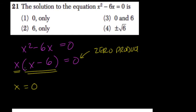So here, we're multiplying these two things and getting 0. So x could be 0, but also x minus 6 could equal 0. Add 6 to both sides, and x could also equal 6.